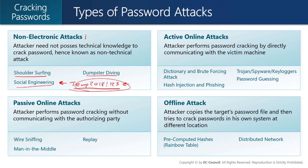Moving over towards electronic attacks, you've got active online versus passive online. With passive, we could sniff the packets as they're going across the wire. A lot of applications are web applications, which means if we perform wire sniffing and that application sends a cookie across the wire inside of an HTTP header, that cookie is basically their authentication token. So if I can capture or steal that cookie, I can authenticate as though I'm that particular user.